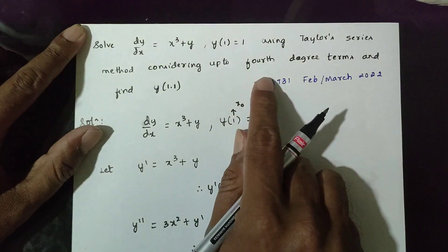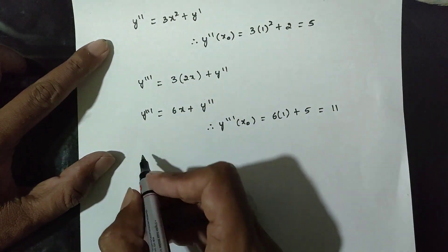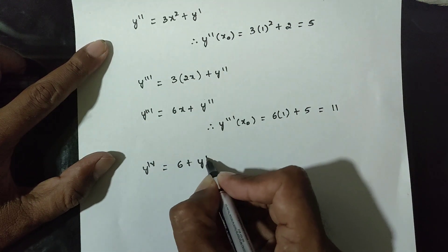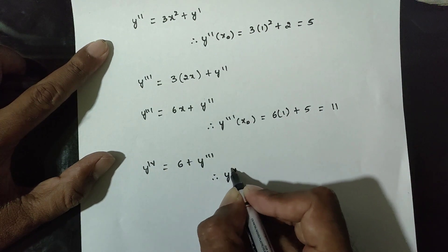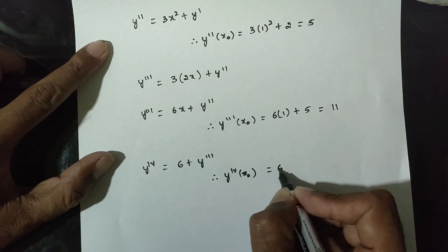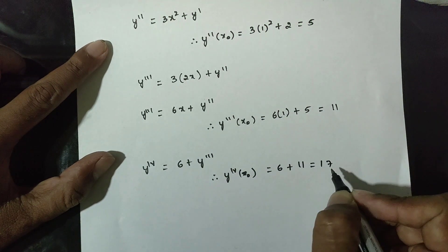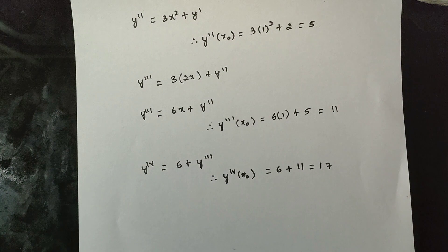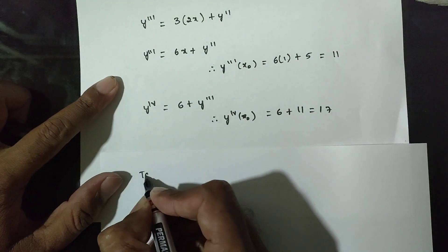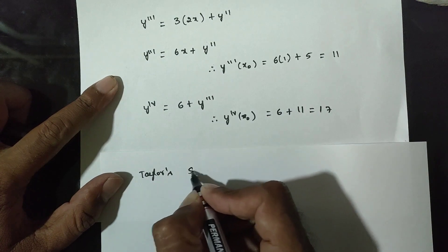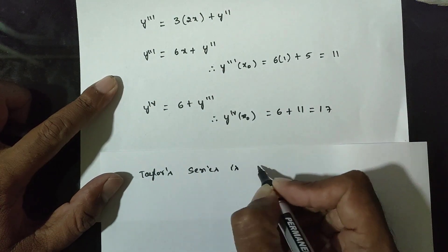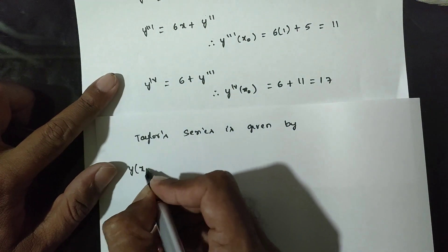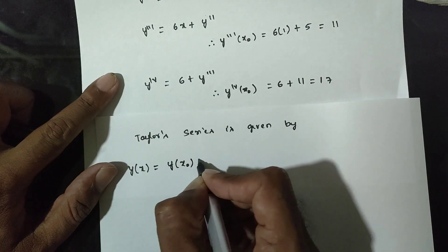Continuing, y double-dash differentiates to y triple-dash, and y triple-dash differentiates to y 4th-dash. Computing y⁴-dash of x₀: the expression involves 3x plus 6 plus y, giving y⁴-dash of x₀ equals 17.